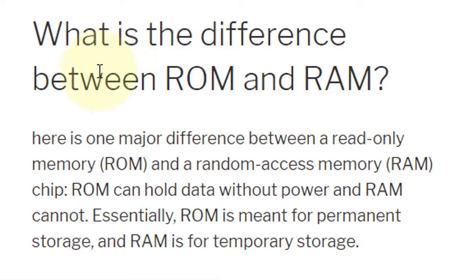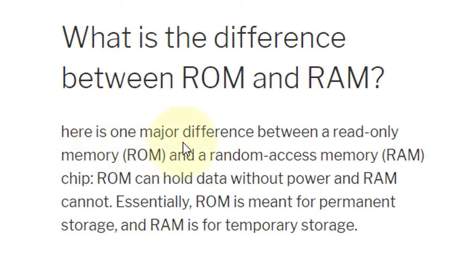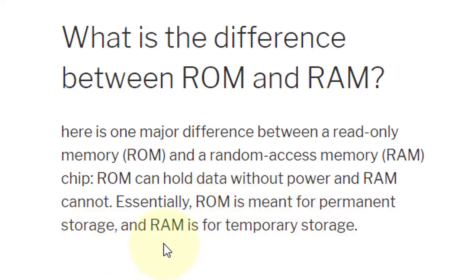Hello everyone. In this video I am going to show you what is the difference between ROM and RAM. Here is one major difference between a read only memory ROM and a random access memory RAM. A ROM chip can hold data without power and RAM can't. Essentially, ROM is meant for permanent storage and RAM is for temporary storage.